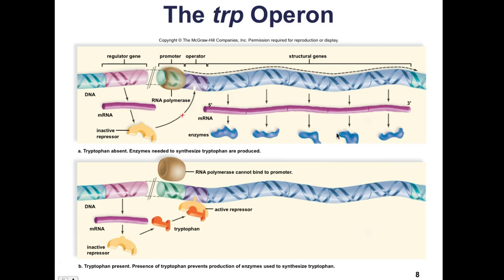Once tryptophan is synthesized in the cell, it binds to the inactive repressor and changes its conformational structure, converting it into an active repressor. This active repressor then inhibits RNA polymerase from binding to the promoter region, so RNA polymerase cannot transcribe the genes encoding the enzymes for tryptophan synthesis.